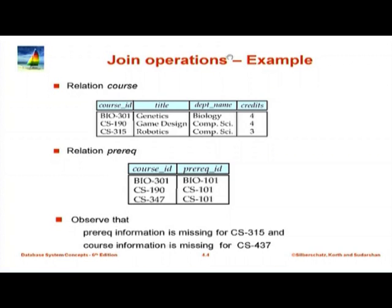We are going to look at outer joins now, using the following tiny relations as our running example. We have a relation course with three courses: BIO 301, CS190, and CS315. Then we have the relation prereq, which has prereqs for BIO 301 and CS190, and a prereq for one more course, CS347, which is not in the course relation. We are calling these relations course and prereq for convenience — they could be the result of a select on the course relation or a select on the prereq relation, and then we join the outputs.